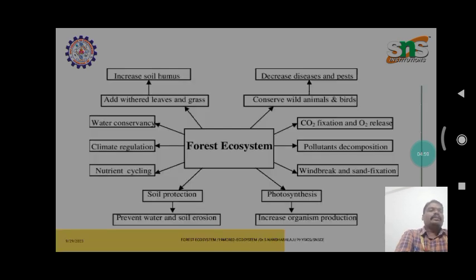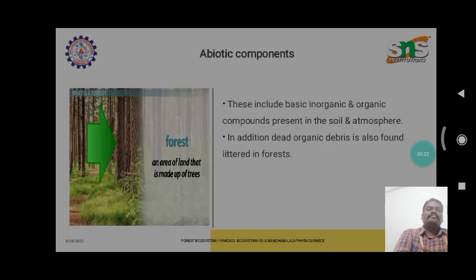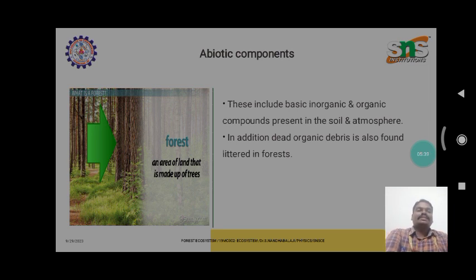The picture shows the forest ecosystem cycle. In this cycle, one side represents the increasing of soils and the other side represents the increase of diseases and pests. Abiotic components include basic inorganic and organic compounds present in the soil and atmosphere. In addition, organic deposits are also found littered in forests.